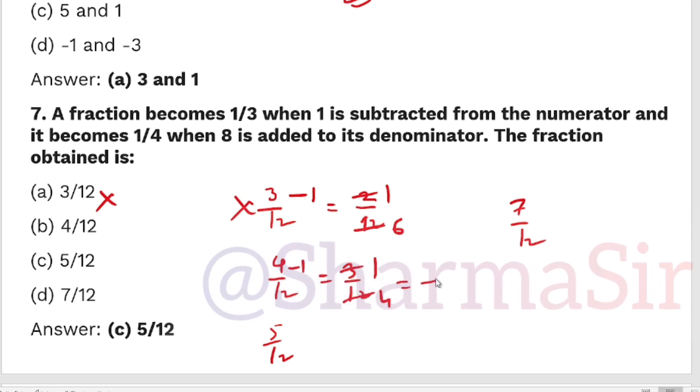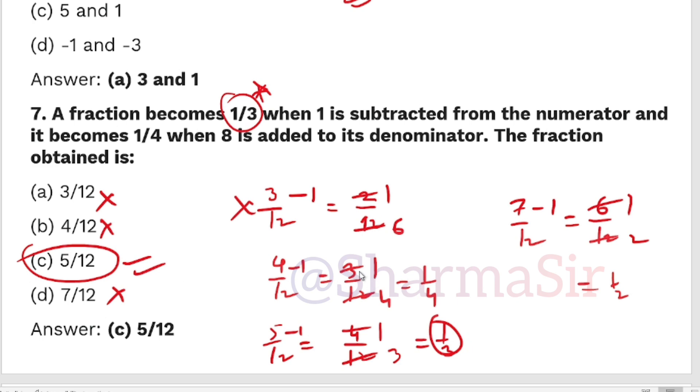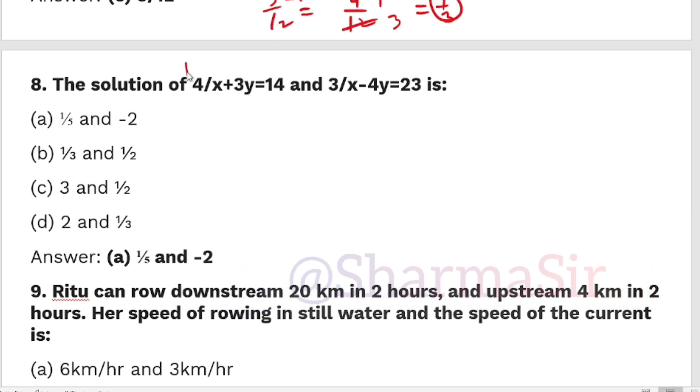1/4 is the answer. Let me set up the equation: x-1 over y equals 1/3, and when 8 is added to denominator it becomes 1/4. So x-1 over y equals 1/3, and 4(x-1) equals y. This gives us the relationship between x and y.